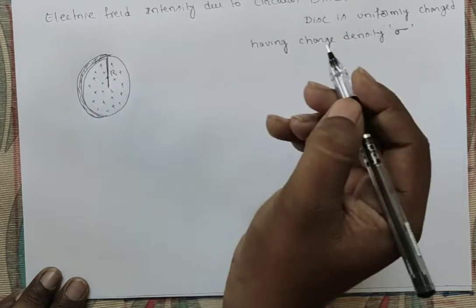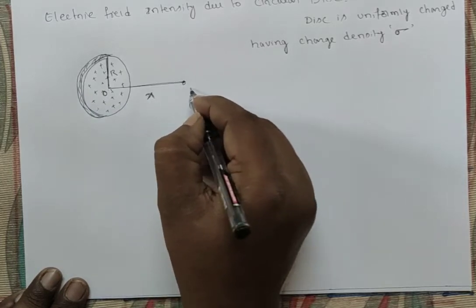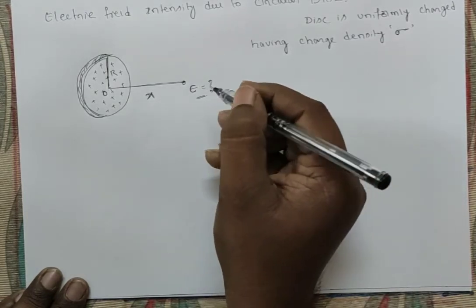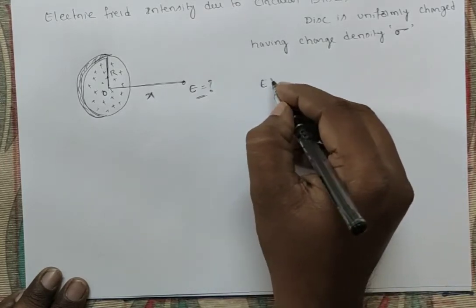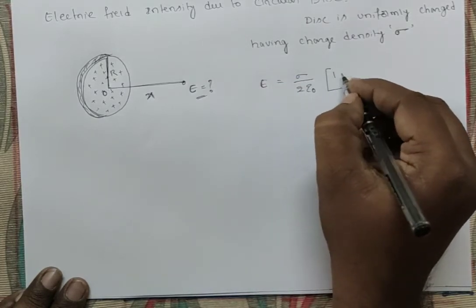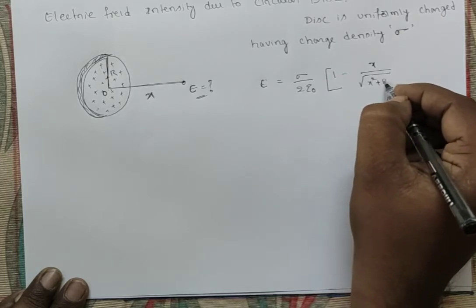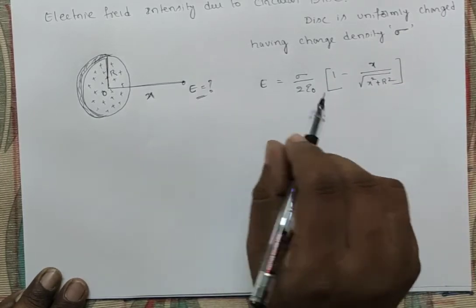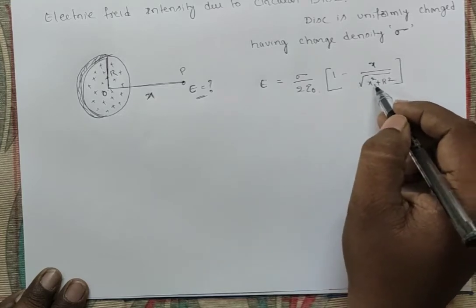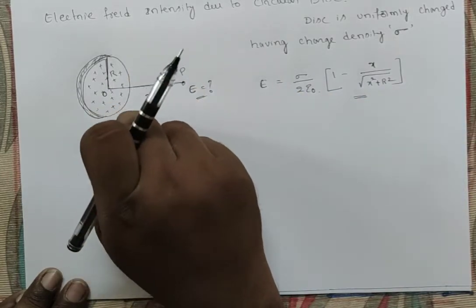The disc has radius R. From its center, at a distance X, the electric field intensity is: E = (σ/2ε₀) · [1 − x/√(x² + R²)]. This is the standard result for the electric field intensity due to a circular disc at a point along its axis.